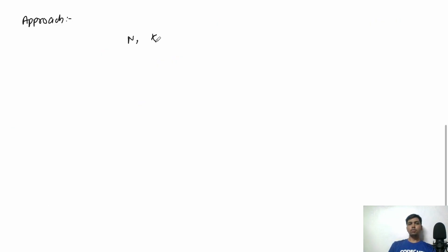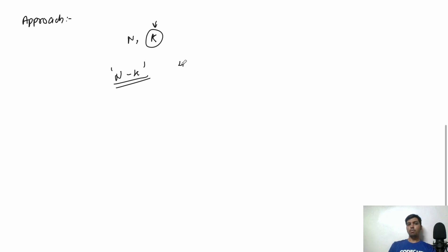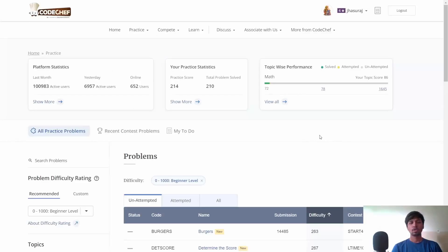Now let's discuss the approach. We are given N, the total number of questions, and K, the marks of Alice — which is the total number of questions marked correctly by Alice. The total number of questions marked correctly by Bob will simply be N minus K. Since each correct question gives one mark, the score of Bob is simply N minus K.